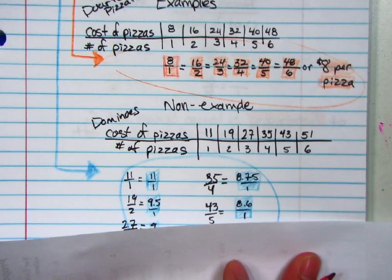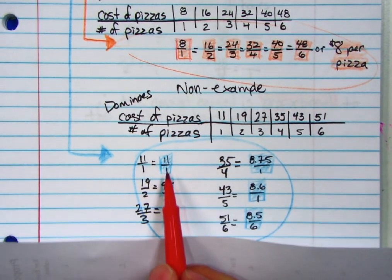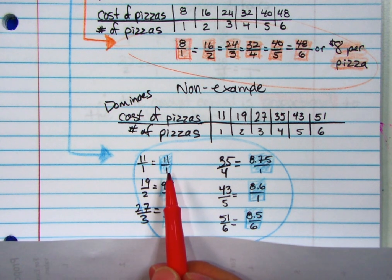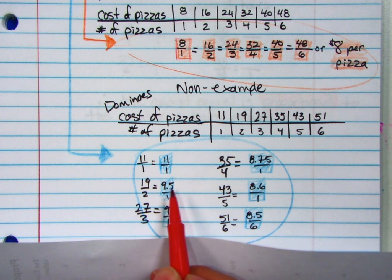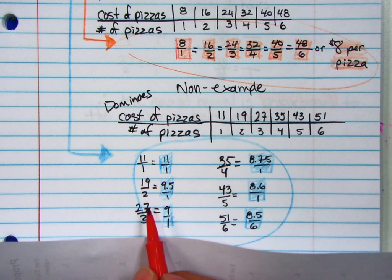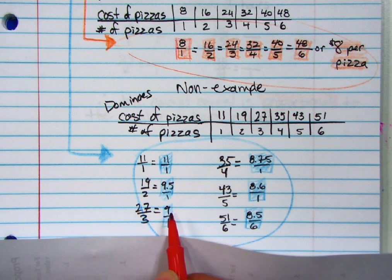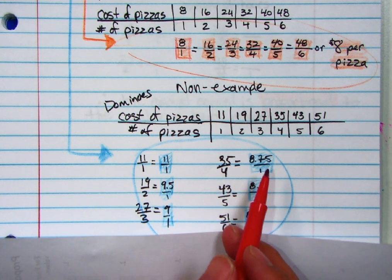If I try to get a unit rate for each of those, the first unit rate is eleven over one. So you're thinking it's eleven dollars a pizza. The next one is nineteen over two, which is nine dollars and fifty cents a pizza. If I order three pizzas, it goes down to nine dollars a pizza. If I order four pizzas, it's eight dollars and seventy-five cents.